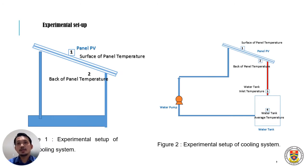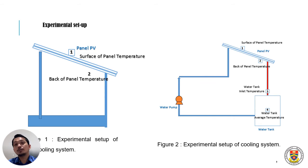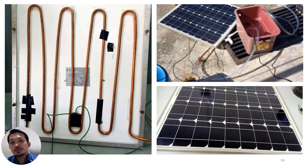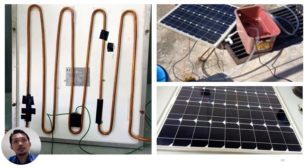This is the schematic diagram of our experimental setup. There are basically two setups: one is a standalone solar PV without the water circulation, and the other one is with the water circulation, so we can compare the solar PV efficiency with and without water circulation. This figure shows the actual solar PV experimental setup. We have a small tank and use a water pump to circulate the water. The solar PV used here is the 50-watt variant, and we use a simple setup of copper tubings at the back of the solar PV to reduce its surface temperature.